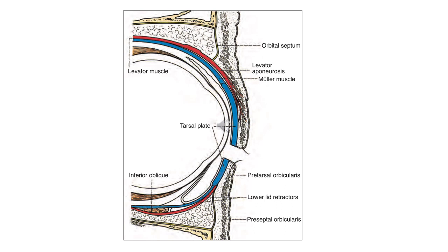I want you to notice an important structure called the orbital septum. It is a fibrous tissue and a continuation of the periosteum of the orbital rim. This structure separates the superficial subcutaneous tissue from the deep orbital tissue.